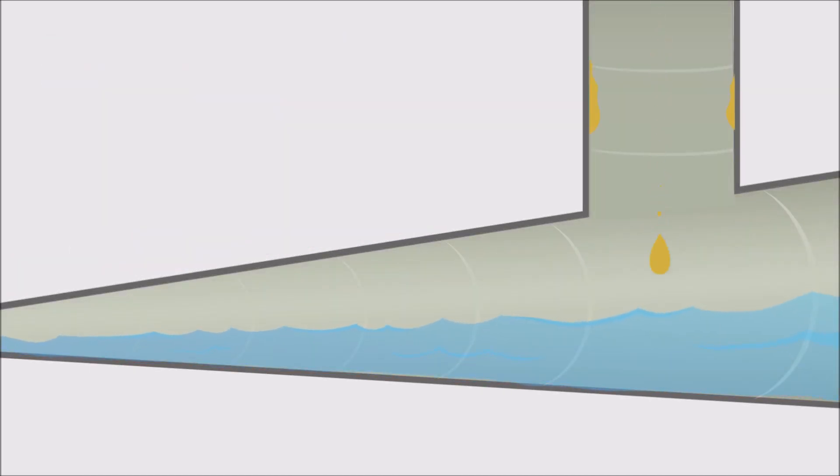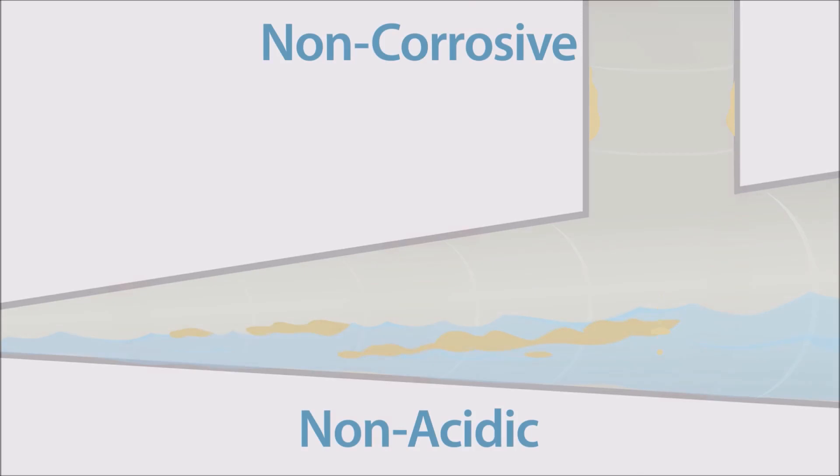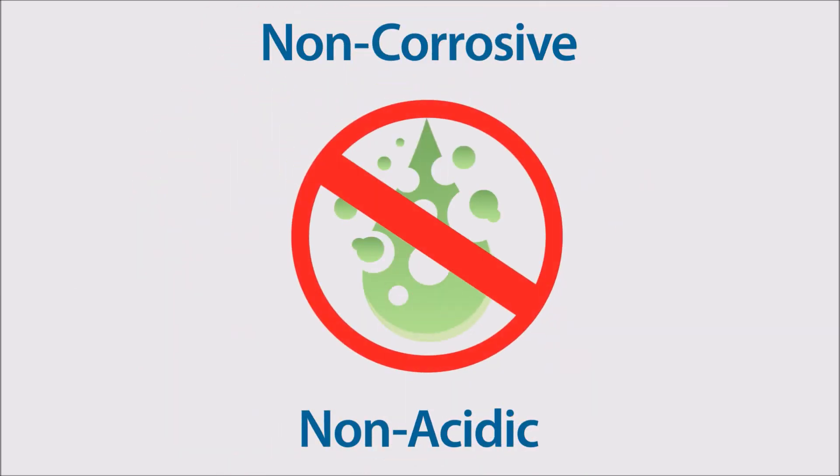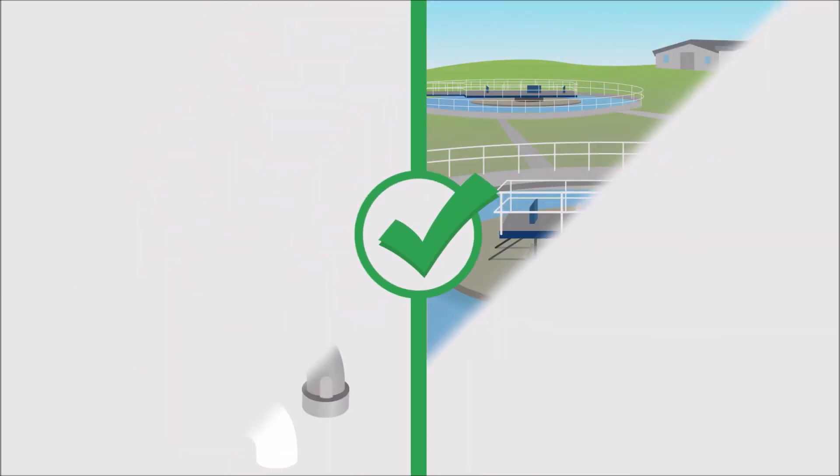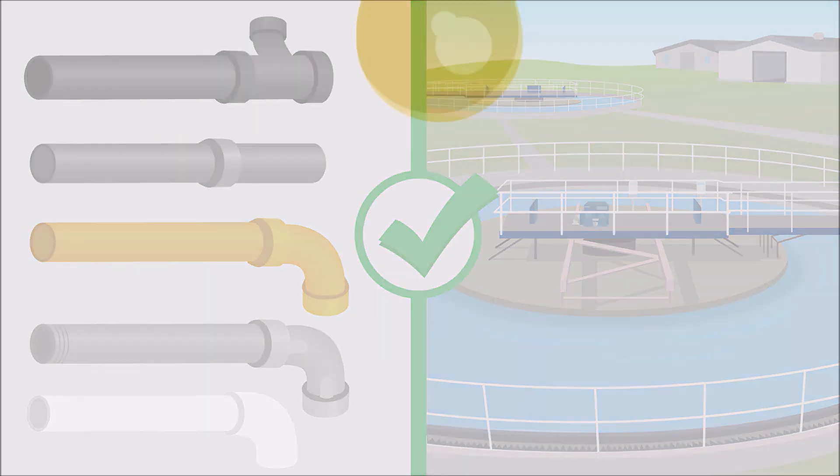Grease-X also leaves behind a coating that prevents grease from reattaching to the pipe in the future. And since it's non-corrosive and non-acidic, it's safe for all types of pipes and water treatment plants.